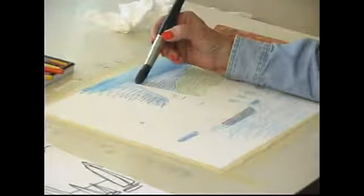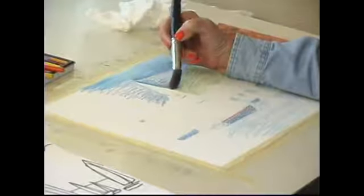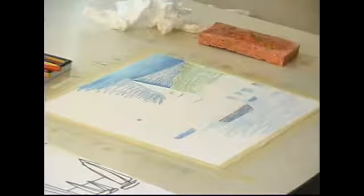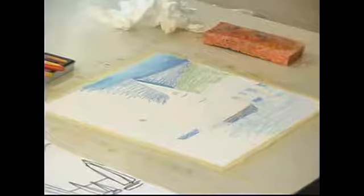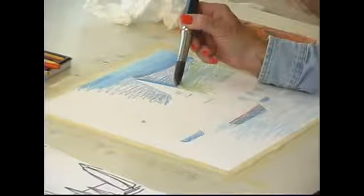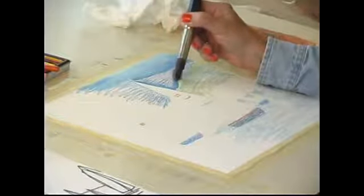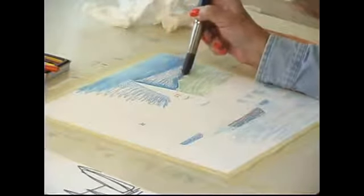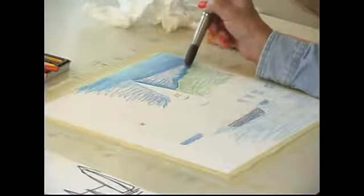I'm going to use my fine edge on the paper here, leaving the white for my sail on my sailboat. Then I'll go to the line of the hill using my blue.